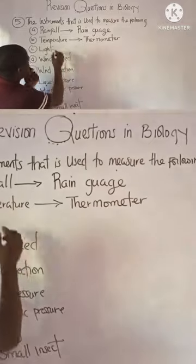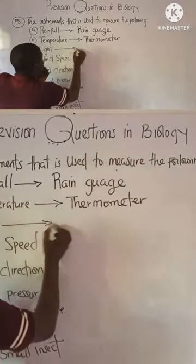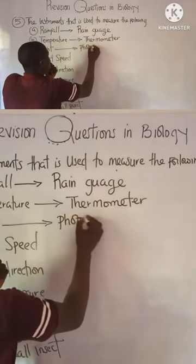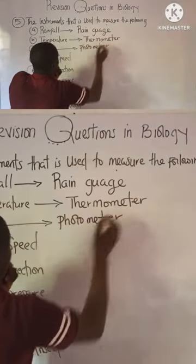What is the instrument used to measure light? It is called the photometer.